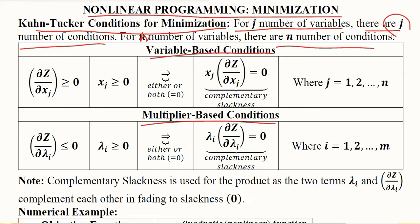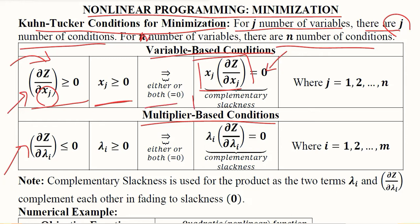The first term is the derivative of the Lagrangian function with respect to the independent variables, and the second is the non-negativity condition of the independent variables. If the product of these two terms equals zero, then either or both of them will be zero, which can be considered a situation of complementary slackness, as explained in the maximization application of nonlinear programming.